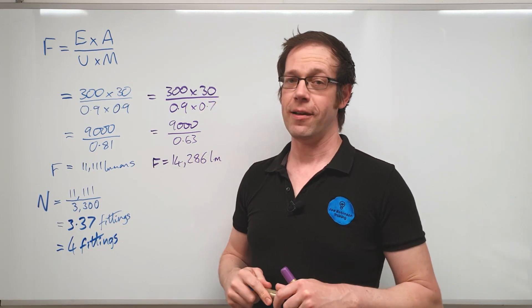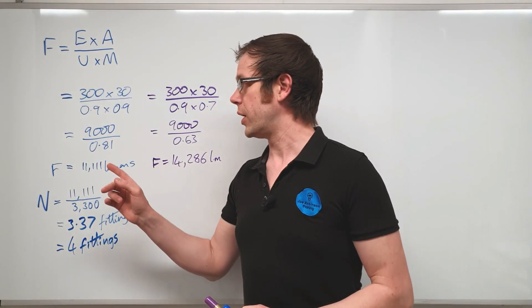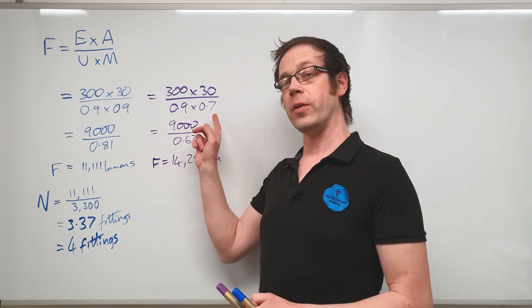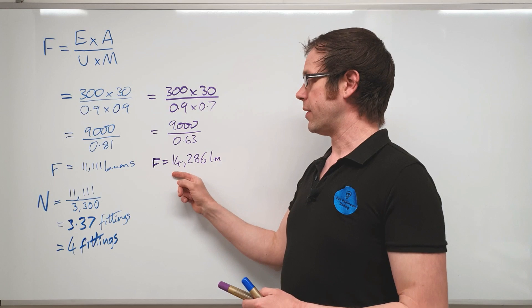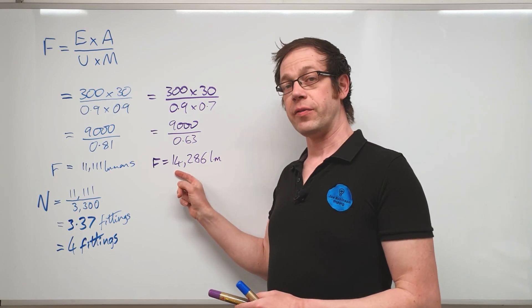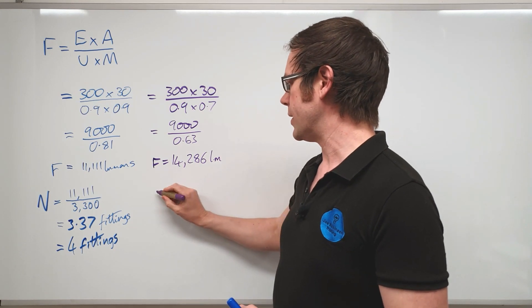Now for our next calculation that we've got here, do you remember for this one we changed the maintenance factor for that room. We made the maintenance factor lower which actually ended up giving us a higher value of luminous flux required.